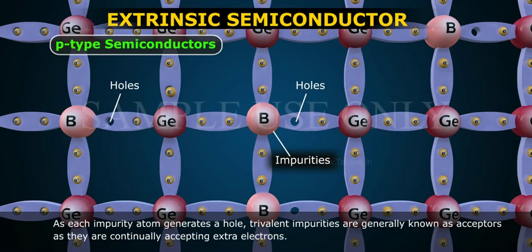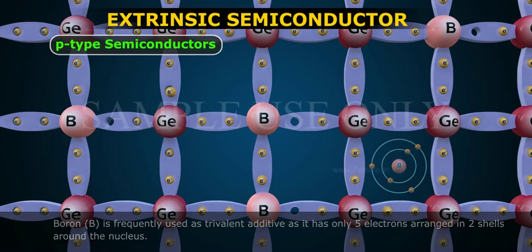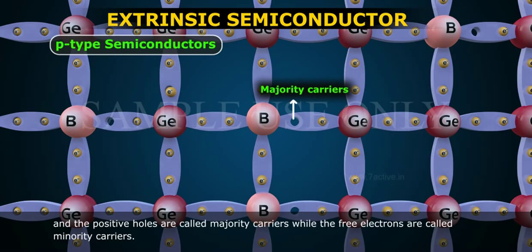Boron B is frequently used as a trivalent additive, as it has only five electrons arranged in two shells around the nucleus. Addition of boron causes conduction which consists of many positive charge carriers, results in a p-type material, and the positive holes are called majority carriers, while the free electrons are called minority carriers.